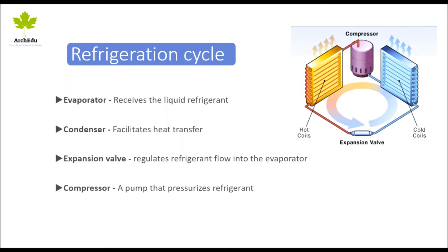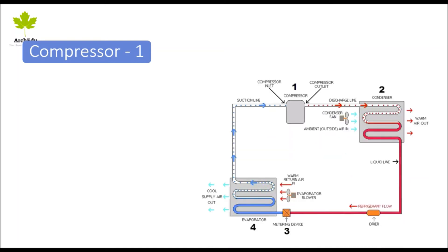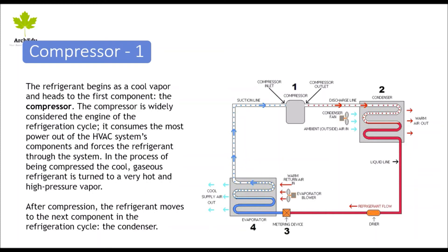First part: the compressor. The refrigerant begins as a cool vapor and heads to the compressor. The compressor is widely considered the engine of the refrigeration cycle. It consumes the most power out of the HVAC system's components and forces the refrigerant through the system. In the process of being compressed, the cool gaseous refrigerant is turned into very hot and high-pressure vapor.